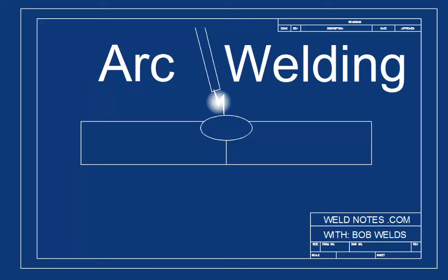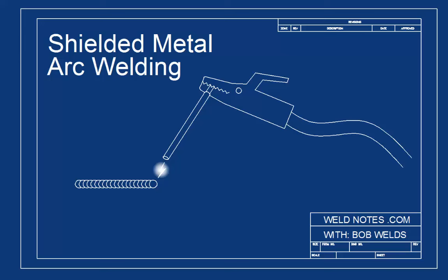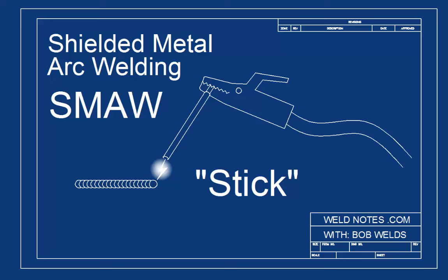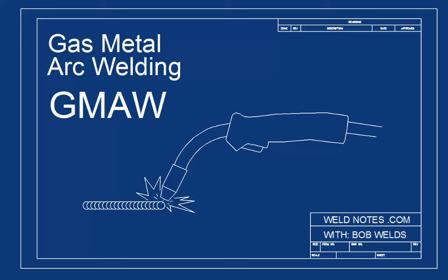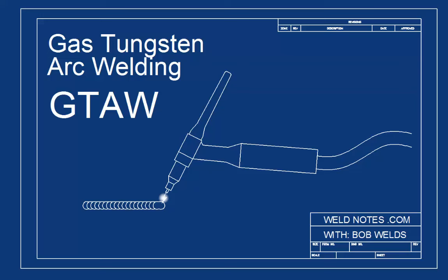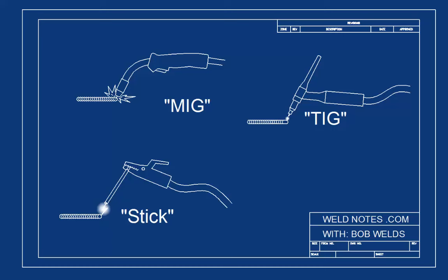These are shielded metal arc welding or SMAW also called stick welding, and there is gas metal arc welding or GMAW usually called MIG, and there is gas tungsten arc welding or GTAW which is called TIG. Now we'll keep calling these stick, MIG and TIG for short.